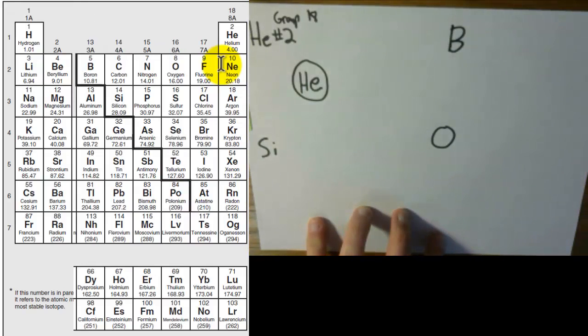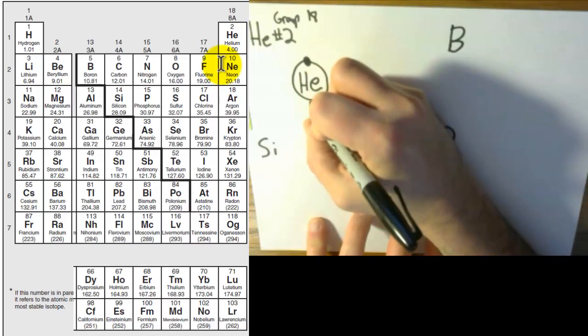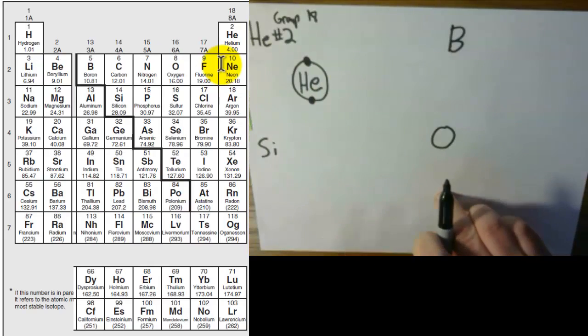Then you would look at the number of electrons that it has. This is in group 8 or 18, and normally that would mean 8, but since it's the second element, it only has two. So since it's element number two, our picture for it is going to have two dots. Those can go anywhere on that circle, it doesn't really matter where. For now, it doesn't really matter.